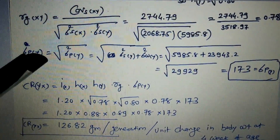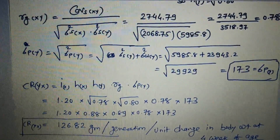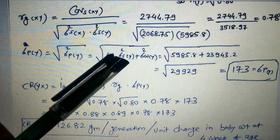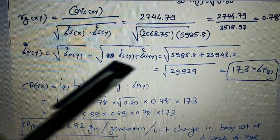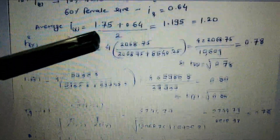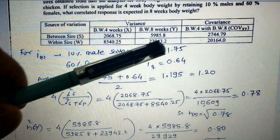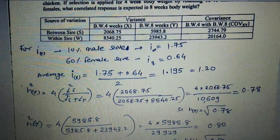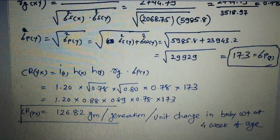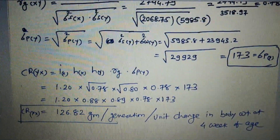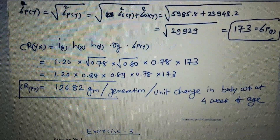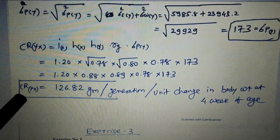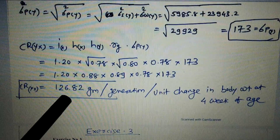The phenotypic standard deviation for the Y trait equals the square root of its total phenotypic variance. For eight-week body weight: Variance_Sy + Variance_Wy = 5985.8 + 23943.2, and taking the square root gives σ_Py = 1.73 (in appropriate units). Substituting all values into the correlated response formula, we get CR_y = 126.82 grams per generation.